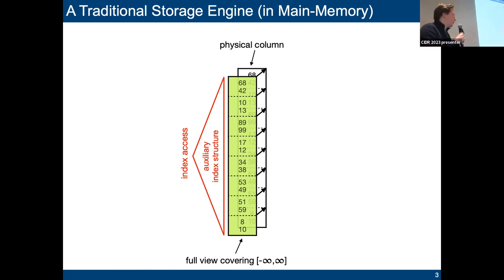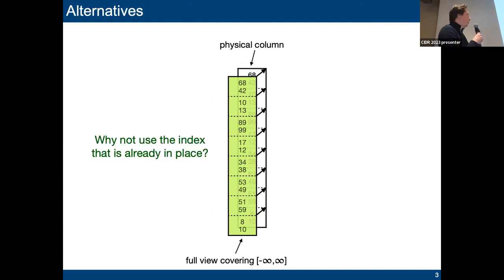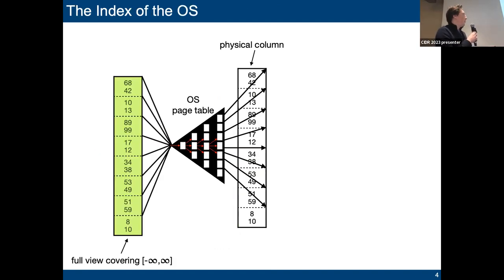To counter this, the only thing we can do in this situation is basically build some kind of auxiliary index structure on top of that. The question we ask at work is, instead of doing that, why not use the index that is already in place? In this situation, what kind of index is here in place? The index of the operating system, namely the page table, which maps the individual virtual pages to the corresponding physical pages.